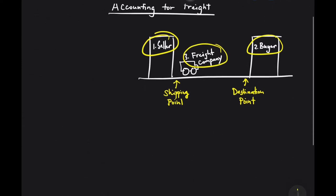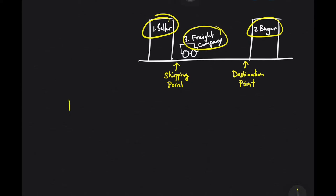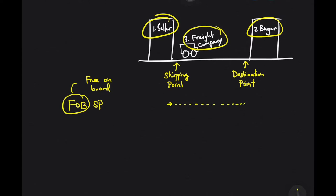What does it mean when the problem says FOB shipping point? FOB here means 'free on board.' FOB shipping point means that the transportation is free or paid by the seller from the seller's place to the shipping point. From that point onwards, it shall be shouldered by the buyer, because it is at the shipping point where the transfer of ownership happens.